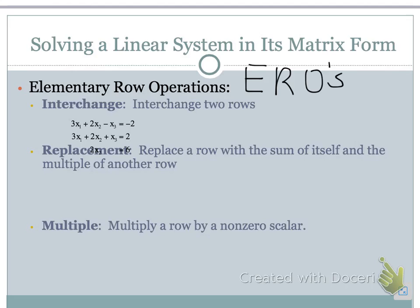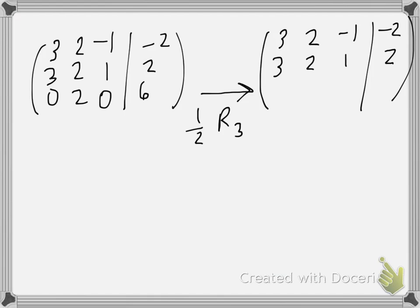Our last ERO is that we can multiply a row by a non-zero scalar. For example, here, again we see we have our original augmented matrix. Now we want to change row 3 by multiplying 1 half times row 3. So, of course, 0 times 1 half is 0. 1 half times 2 is 1. 1 half times 0 is 0. And 1 half times 6 is 3. And again, we notice that the first two rows are unchanged.